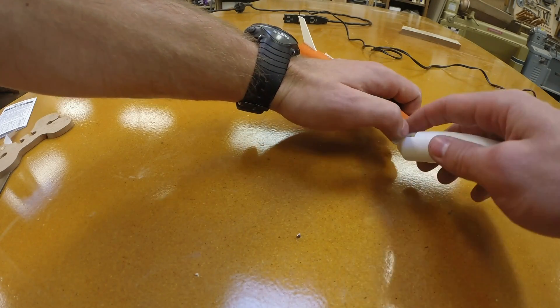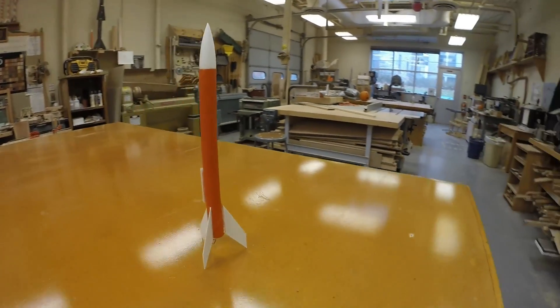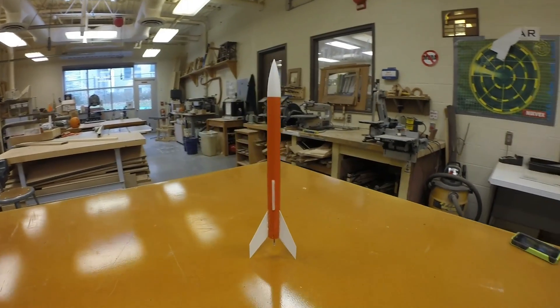Stuff everything else inside including the shock cord and the nose cone and this rocket is ready for action. Now you can decorate, put an engine in, get ready for launch.